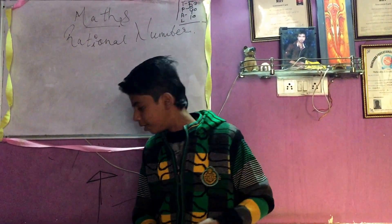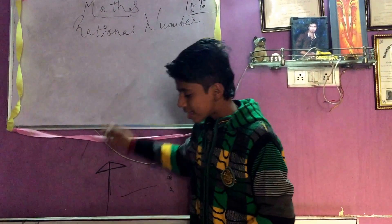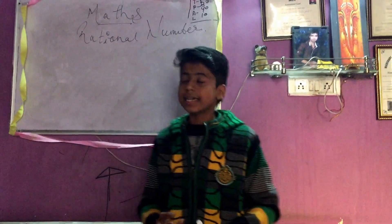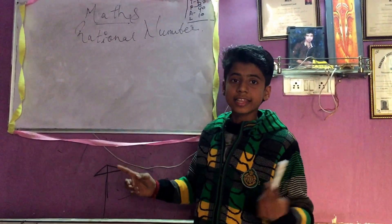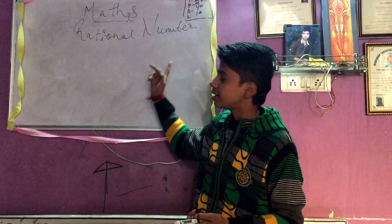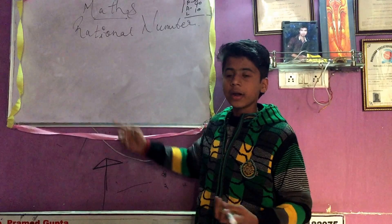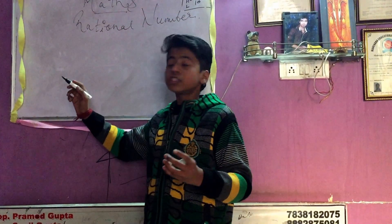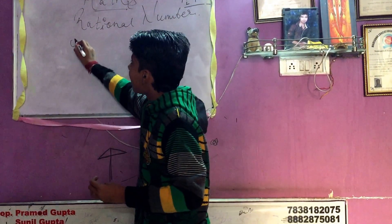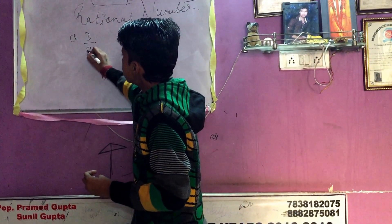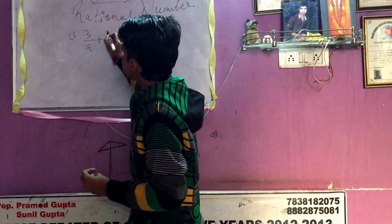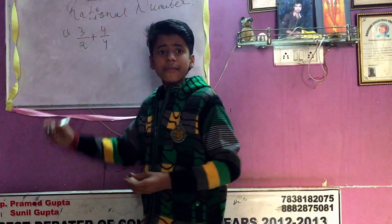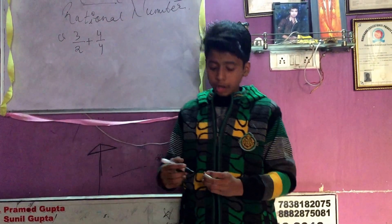As you know, in your books — like in class six, seven, or eight — these chapters are available. The type of question you will see looks like this: three upon two plus four upon four. This type of question will be in your book.